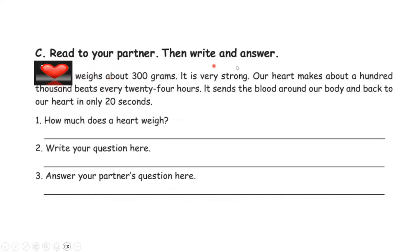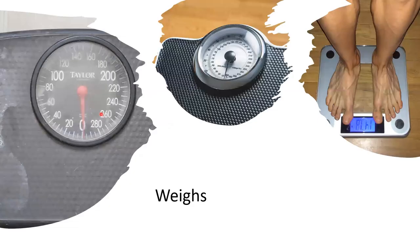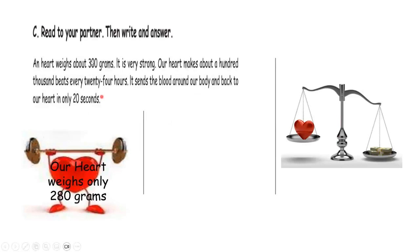Read to your partner, then write an answer. The heart: a heart weighs about 300 grams — it is very strong. Our heart makes about 100,000 beats every 24 hours. It sends the blood around our body and back to our heart in only 20 seconds. Our heart weighs about 300 grams, and our heart is very strong.